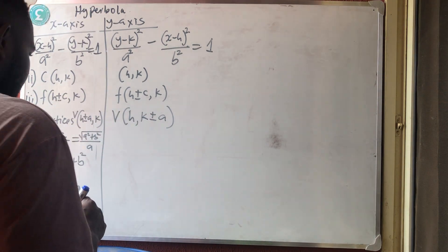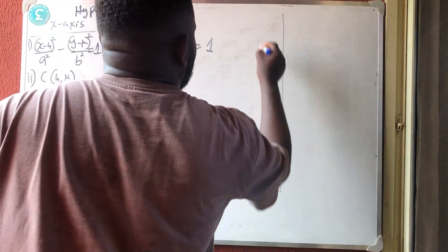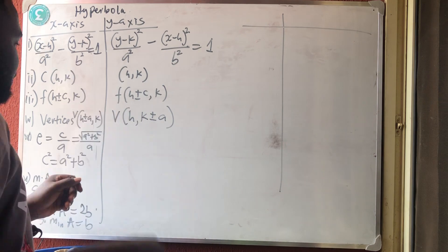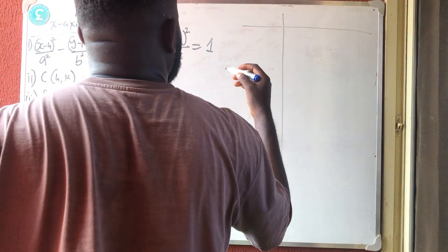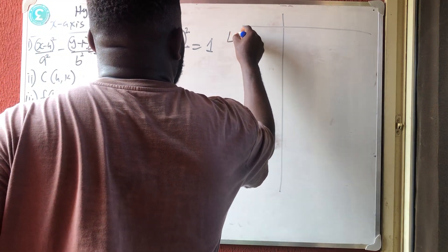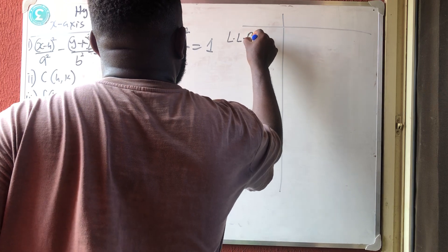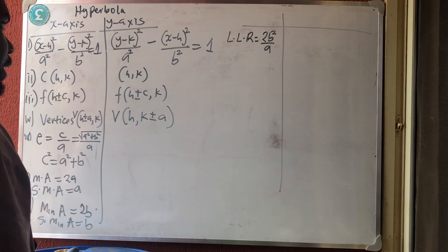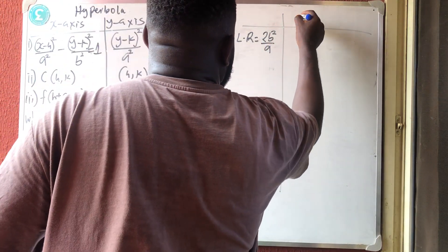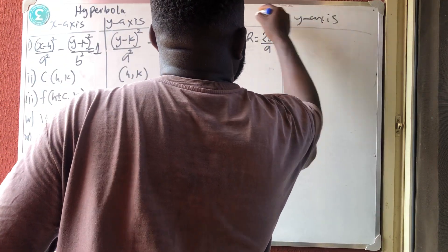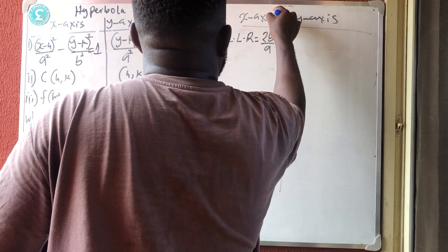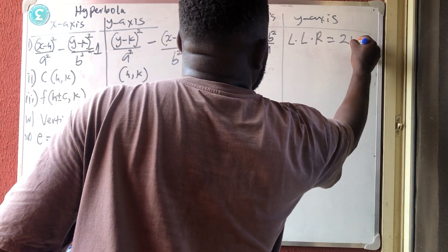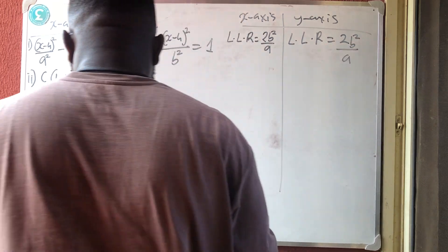The length of latus rectum doesn't change — it's the same as for ellipse. Length of latus rectum = 2b² / a. This is the same for both the x-axis and y-axis cases.